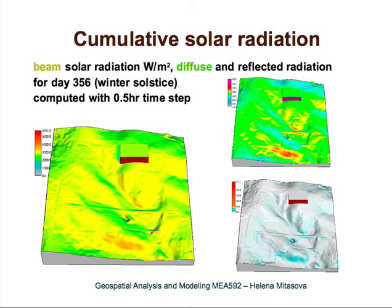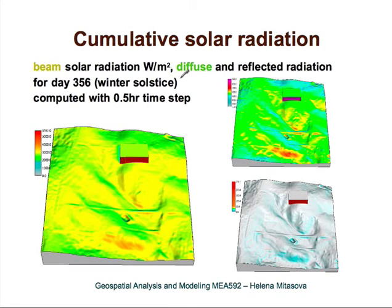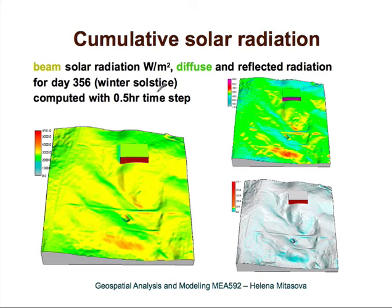Here we have these three components. This is the beam solar radiation — it has the highest values. In this topography it varies from 1000 to almost 6000 watts per square meter. Then we have diffuse radiation, which is about one magnitude smaller — in the hundreds of watts per square meter. And in this location reflected radiation is even smaller, mostly because we don't have any highly reflective surface here — it's mostly vegetated. This is daily cumulative solar radiation computed with a half-hour time step for day 356, which is the winter solstice, December 22nd.